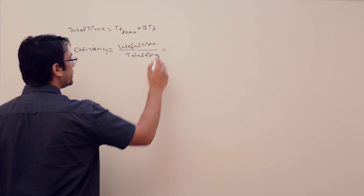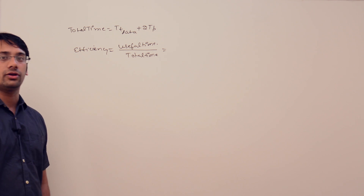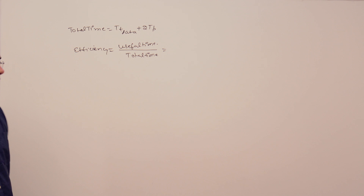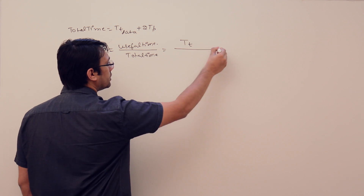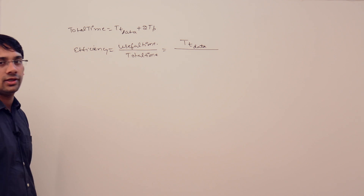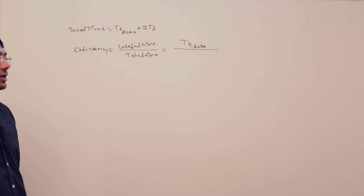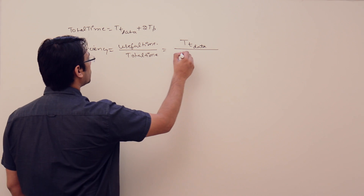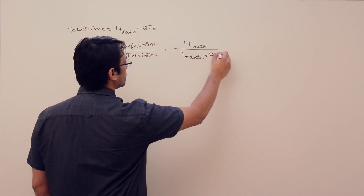Useful time means, in this complete communication, what is the useful time? It is only the time where the sender was busy transmitting the data. So efficiency is transmission time of data upon total time, and the total time is transmission time of data plus 2 into propagation time.